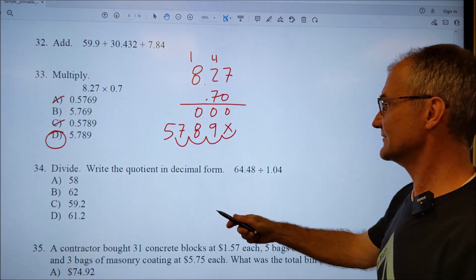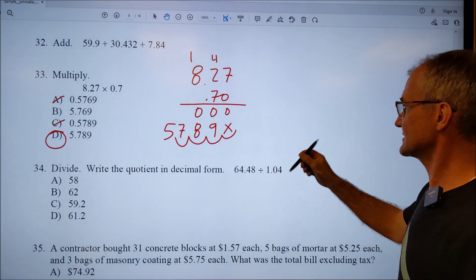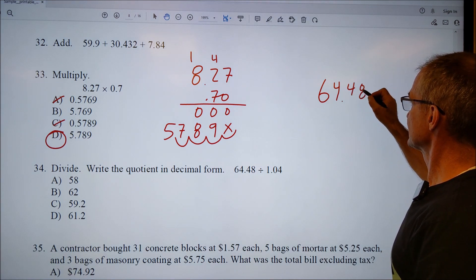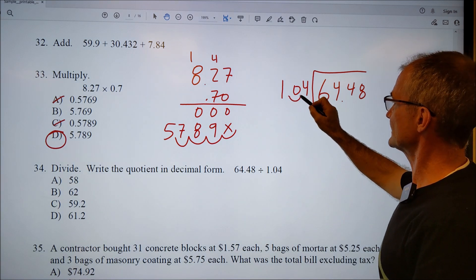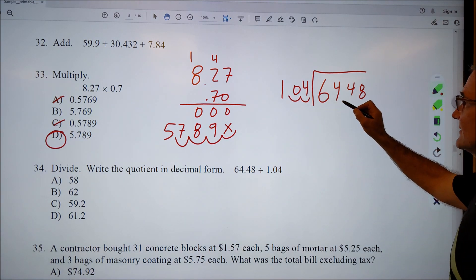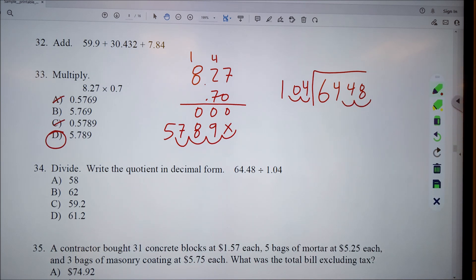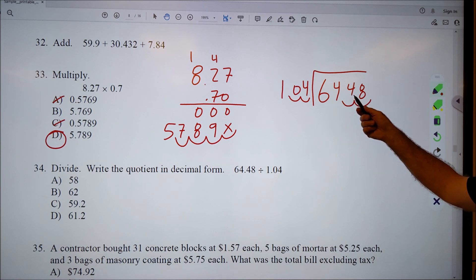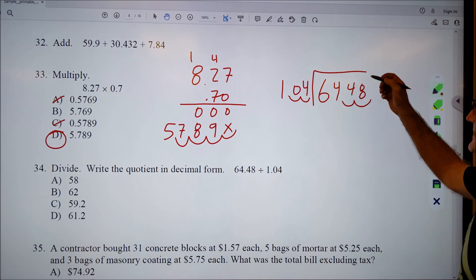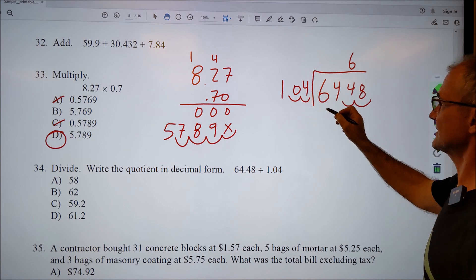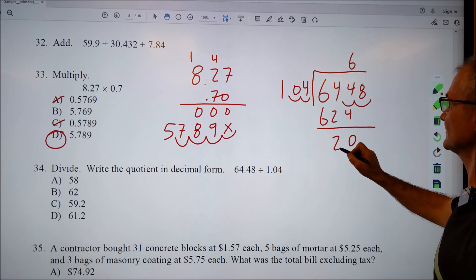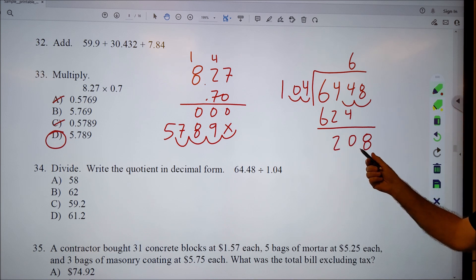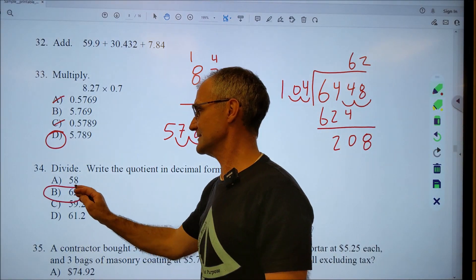Number thirty-four. Divide the quotient in decimal form. So 64.48 divided by 1.04. I am going to move this over one, two to get 104. If I do that there, I do it here as well to get 6448. So 104 is going to go in a 644 six times. And that is going to give me 624. And then four minus four is zero. Four minus two is two. Bring down the eight. And then 104 is going to go in a 208 two times, 62. So there's my answer right there. Answer B, sixty-two.